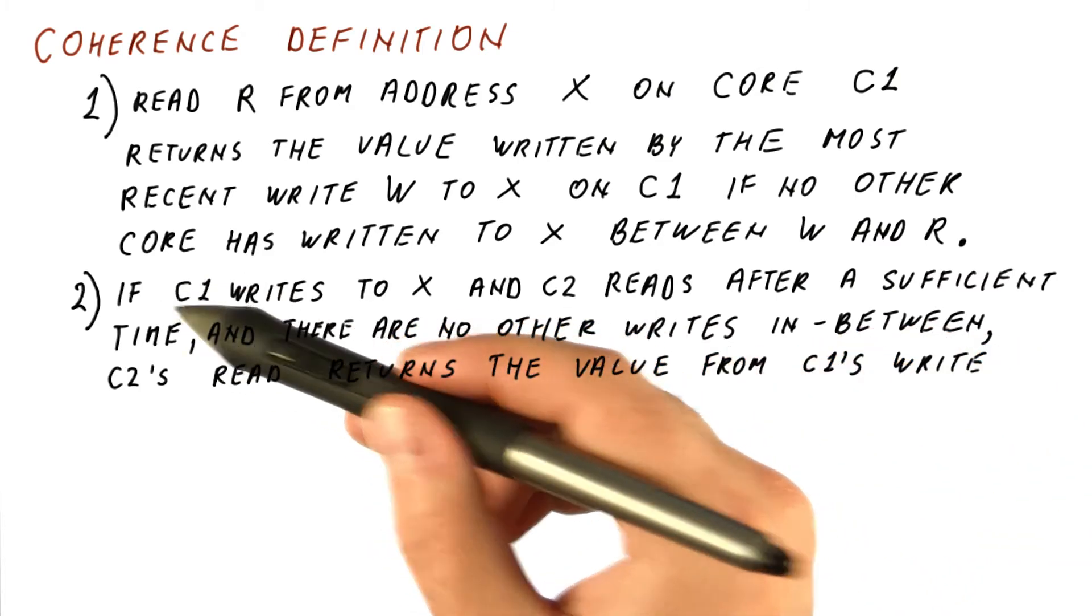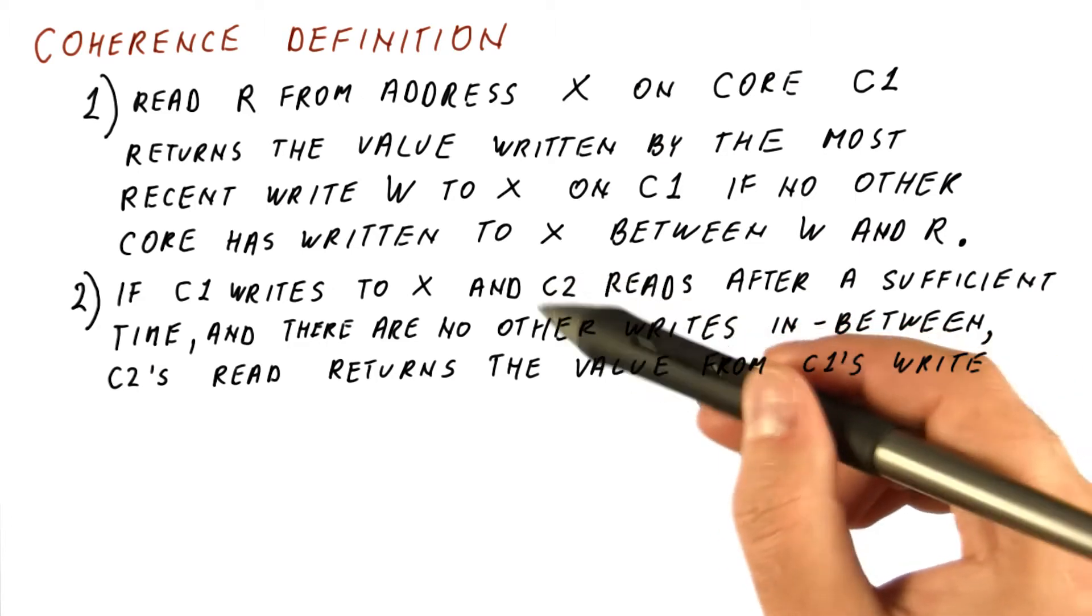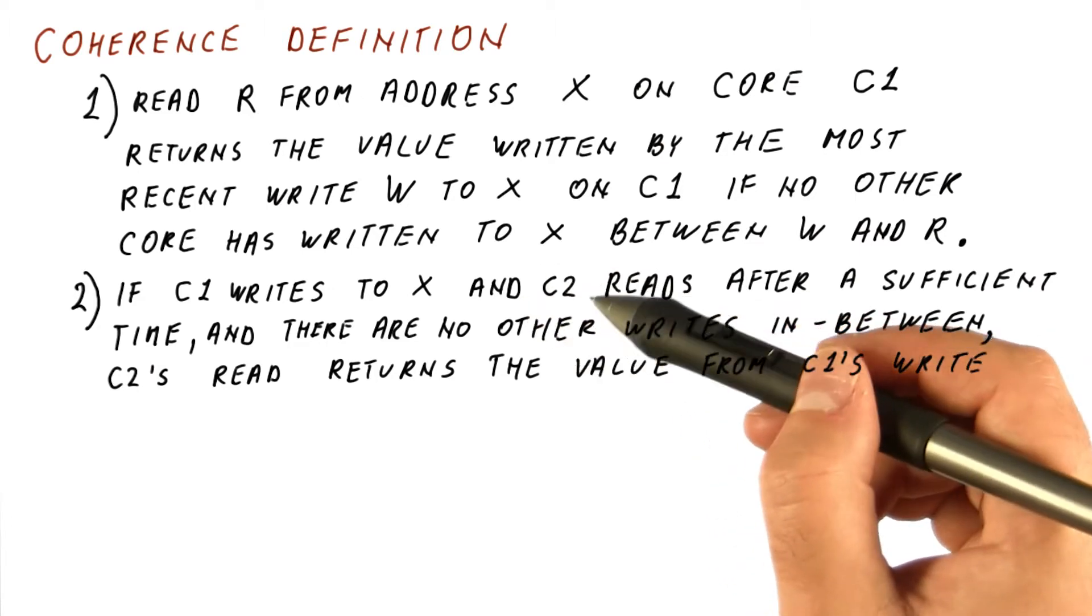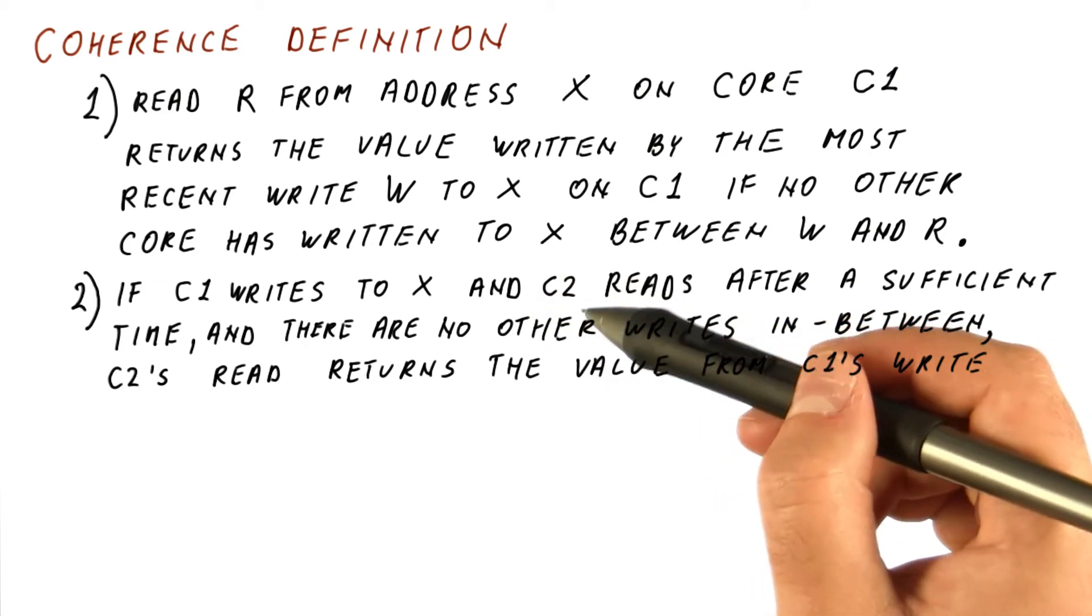if c1 writes, then after some sufficient time, c2 must start reading the new value, even if maybe a normal cache with no coherent support would just keep reading the stale value because it never gets replaced.